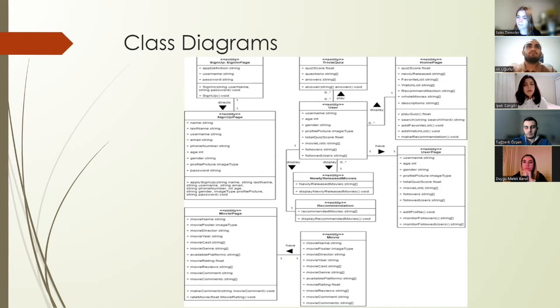After the registration, user can display the homepage, but it is different from before the registration. Now, they can see the new release movies, recommended movies, whole movies in our application. And they can make their own movie list and display them. Also, they can play trivia quizzes with using trivia quiz shortcuts. They can use search bar for searching users and movies. In our application, whole movies have a movie page. And in this movie page, there are some information related to the movie, like movie name, movie description, movie cast, movie director. And also, they can do some operations like making comments, monitor comments, monitor reviews, and rate movies. These are all Filmfolio class diagrams.